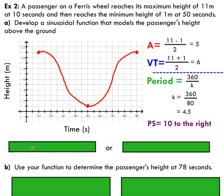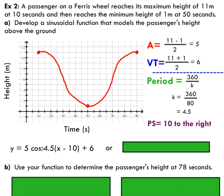Putting all this together into a nice cosine function, you'd see that we've got our amplitude of five, our vertical translation of six, our k value of 4.5, and our phase shift of 10.